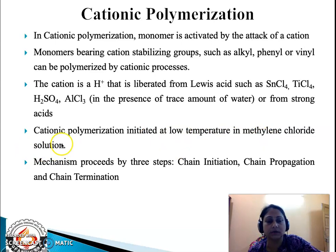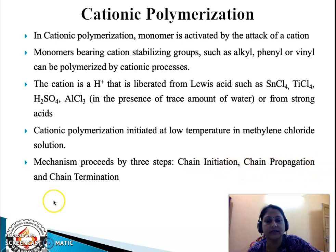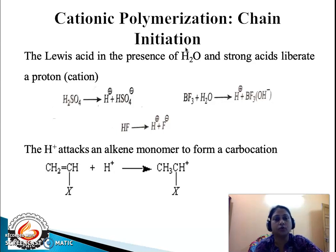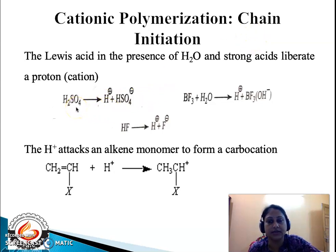As we discussed under free radical polymerization, the cationic polymerization reaction mechanism proceeds by three steps: first is chain initiation, second is chain propagation, and third is chain termination. Under chain initiation, the cation — that is the H⁺ ion, the proton — is liberated by the action of strong acids like H₂SO₄ or HF.